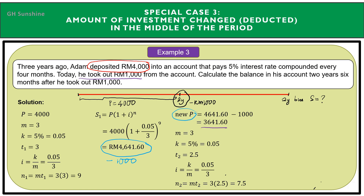The remaining term is two years and six months, so T equals 2.5. Using the new principal of RM3,641.60 and T equal to 2.5, substitute all values into the formula. The maturity value or future value at the end of two years and six months equals RM4,122.22. This is the step-by-step method for calculating the future value when the investment amount is deducted in the middle of the period.